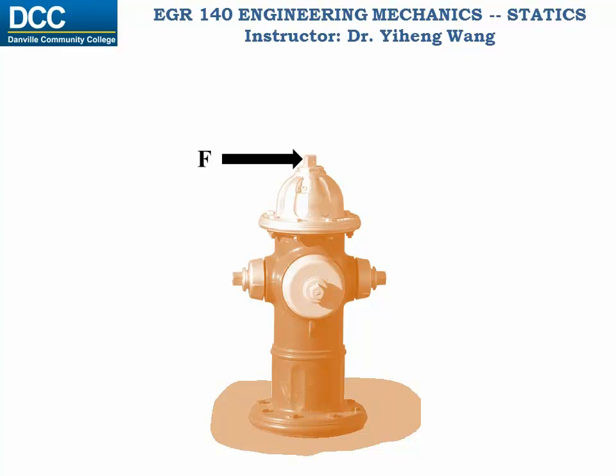Now let's imagine the force F acts on the fire hydrant horizontally. The force creates a translational tendency to push the fire hydrant to the right, but also a clockwise rotational tendency for the fire hydrant to fall to the right. For this fire hydrant to stay still, the ground must create a force supporting it pointing to the left, but also a moment to cancel out the rotational effect.